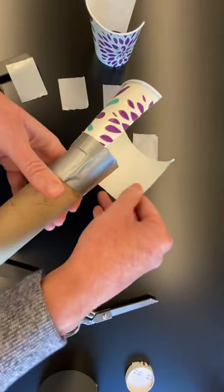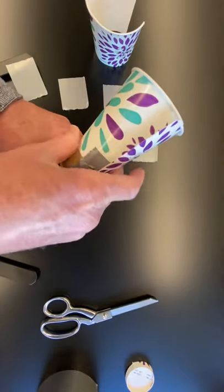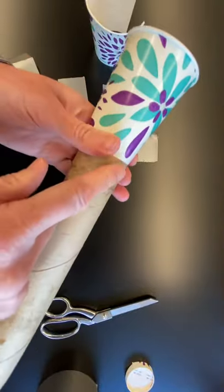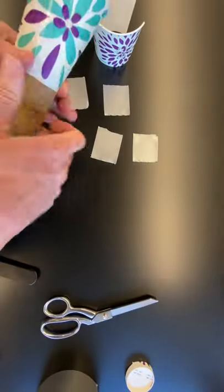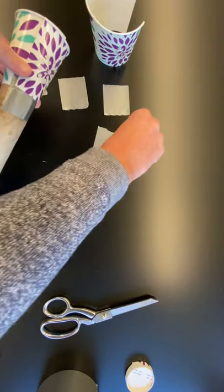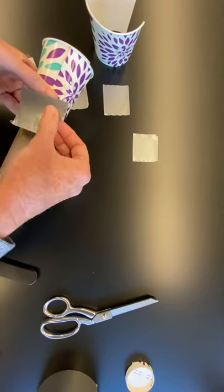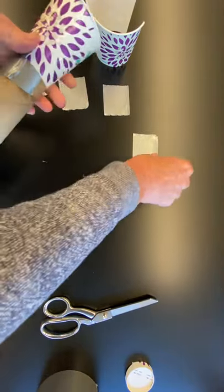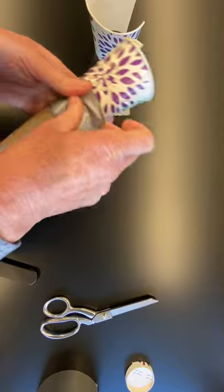Then I'm going to wrap it around like that so that it's kind of tight around the bottom, but the top is still shaped like a cup. Wherever that end piece meets, I'm going to take another piece of tape and tape it down. Now I'm going to put tape pieces around the whole bottom.